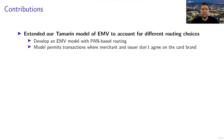The contributions of this work are the following. We extended our Tamarin model of EMV to account for different routing choices. In particular, we developed a model that considers PAN-based routing — a routing mechanism by which the merchant chooses the payment network by looking at the PAN, the credit card number. This model permits transactions where the merchant and the issuer don't necessarily agree on the card brand.